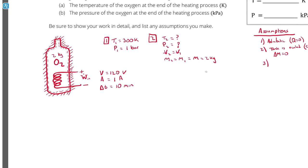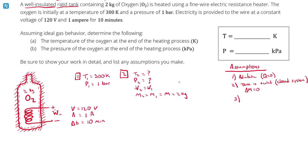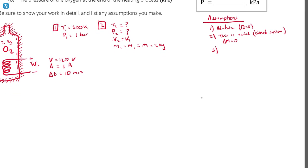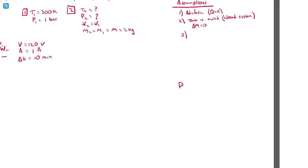Now I can begin my analysis. I need to find temperature and pressure at the end of the process. If I can find one, I can use the ideal gas law to find the other. The ideal gas law states PV = mRT. In my system, oxygen doesn't change, so the specific gas constant R is constant. The tank is rigid so volume is constant, and the tank is sealed so mass is constant. These three variables are all constant.